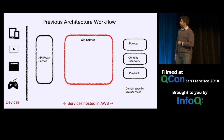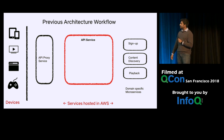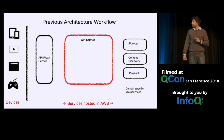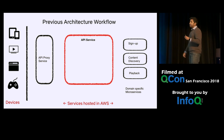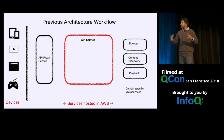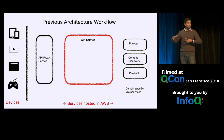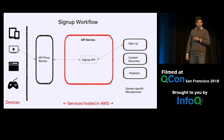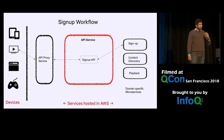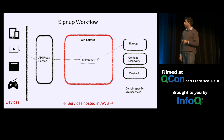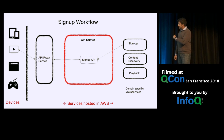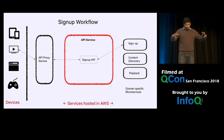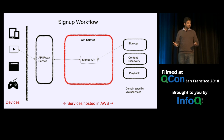Before we dive into the specifics, let's take a quick look at the previous architecture workflow. We support the Netflix application amongst thousands of devices, and millions of requests originating from these devices come into a Netflix ecosystem of services run and operated by various teams. Requests typically come via the API proxy service, whose responsibility is to provide protocol termination, monitoring, and routing. Behind the API proxy service, we have the API service, whose responsibility is to orchestrate all requests. And behind the API service, we have hundreds of microservices with very domain-specific responsibilities.